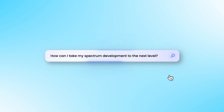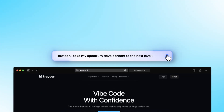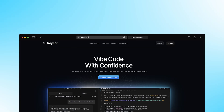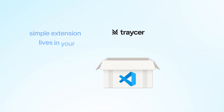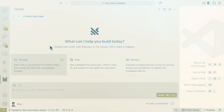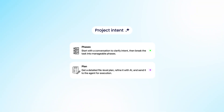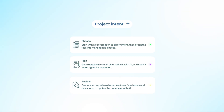In this video, I'm going to show you how you can take your spectrum developments to the next level using a tool called Tracer AI, which is a simple extension that sits in your coding IDE. It follows a three-step process to take the project intent and break it down into different phases.